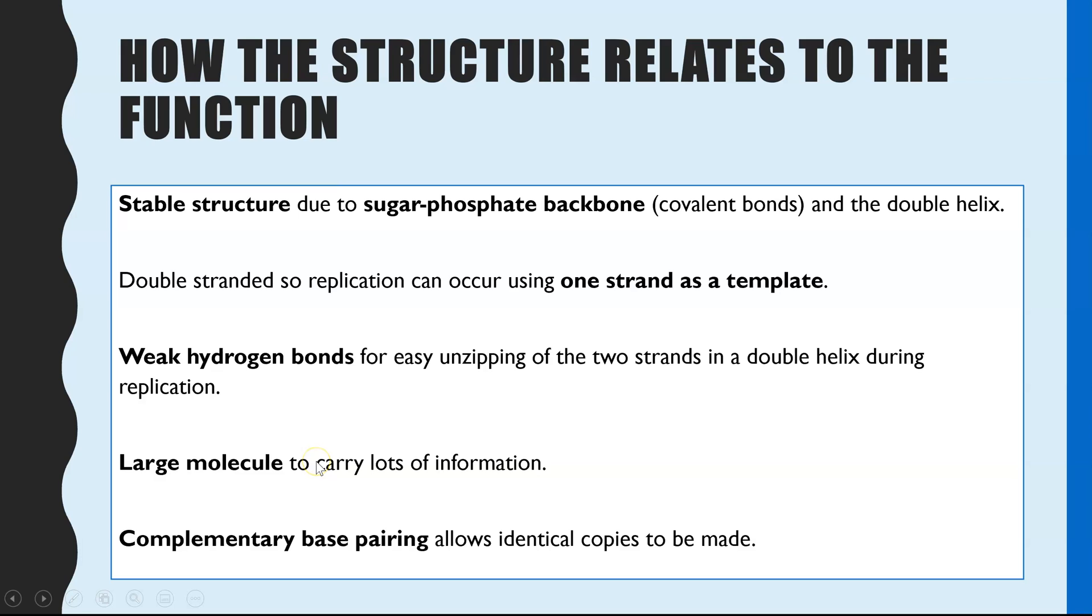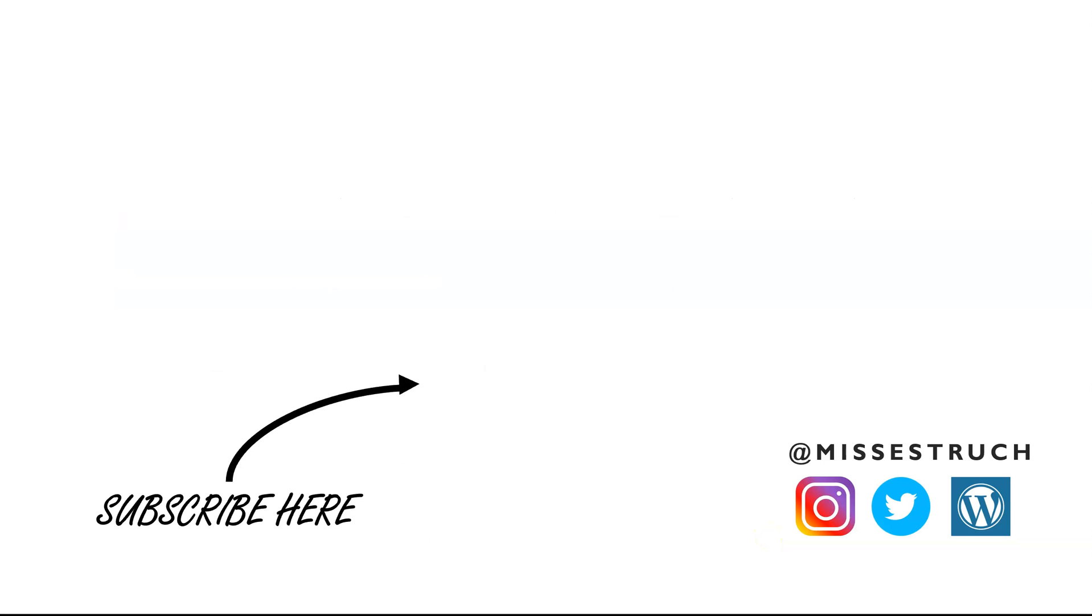Final advantage is the complementary base pairing, and this allows identical copies to be made in DNA replication. So that is it for DNA, the structure, the function, and how those link together. I hope you found it helpful. If you have, give it a thumbs up.